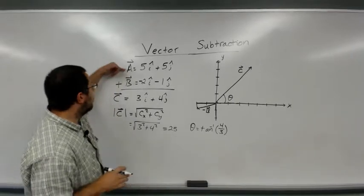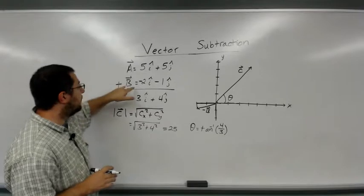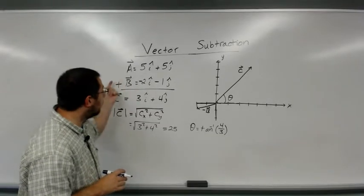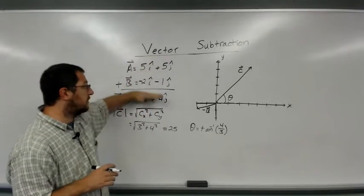To sum up, you can do it by taking the vector that you're subtracting, multiply through by a negative, and then just add the components.